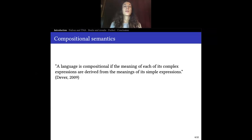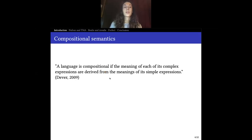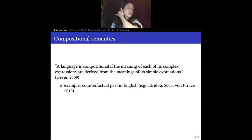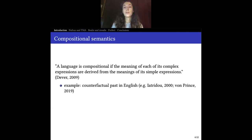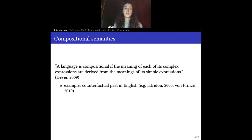Let us start by identifying what compositional semantics is. We could say that a language is compositional if the meaning of each of its complex expressions is derived from the meanings of its simple expressions. We can take an example of the counterfactual past in English. In English, you can use past tense to refer to counterfactual events that are not necessarily in the past. For example, I could say 'if I were there right now, he would be more relaxed.' So I'm talking about a current event, something happening in the present, but still using past in order to denote this modal meaning — the fact that the event could have happened, but it is not happening.